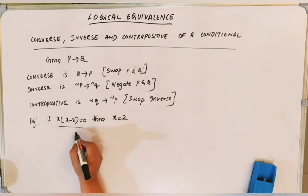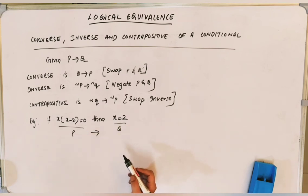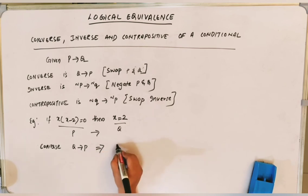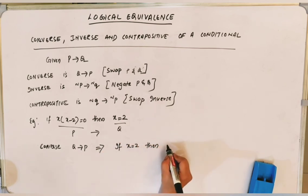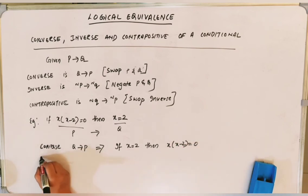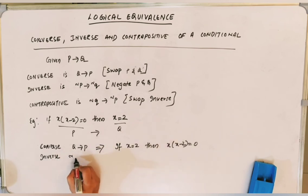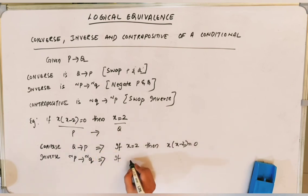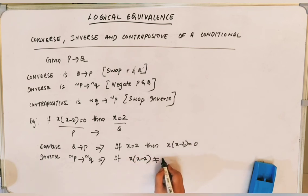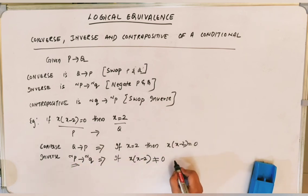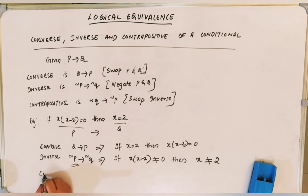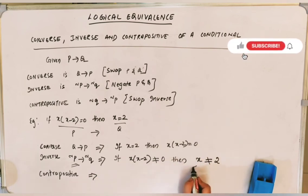Example: 'If X(X−2) = 0, then X = 2.' P is 'X(X−2) = 0', Q is 'X = 2'. Converse: 'If X = 2, then X(X−2) = 0.' Inverse: 'If X(X−2) ≠ 0, then X ≠ 2.' Contrapositive: 'If X ≠ 2, then X(X−2) ≠ 0.'